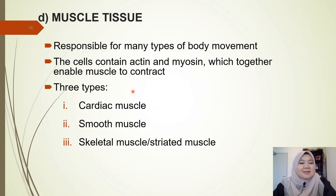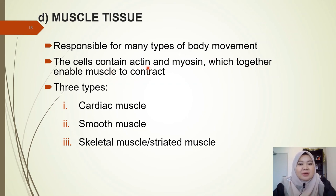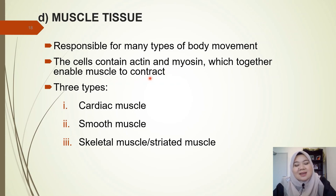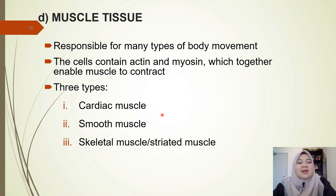The last category of animal tissue is muscle tissue, which is responsible for many types of body movement. The cells contain actin and myosin, which together enable muscles to contract — these proteins were covered in the previous subtopic on the cytoskeleton. We have three types of muscles: cardiac muscle, smooth muscle, and skeletal or striated muscle.